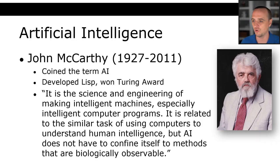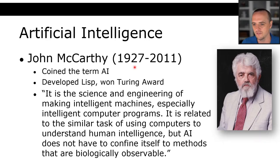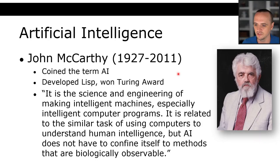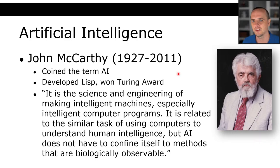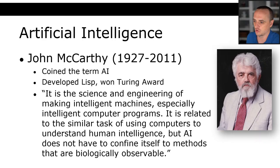John McCarthy, a Turing Award winner who coined the term AI, said: 'Artificial intelligence is the science and engineering of making intelligent machines, especially intelligent computer programs. It is related to the similar task of using computers to understand human intelligence, but AI does not have to confine itself to methods that are biologically observable.' That is very important — a lot of people say neural nets are true AI because they mimic the brain, but if you have a machine that appears intelligent, that is artificial intelligence.